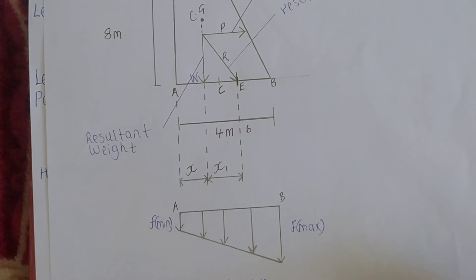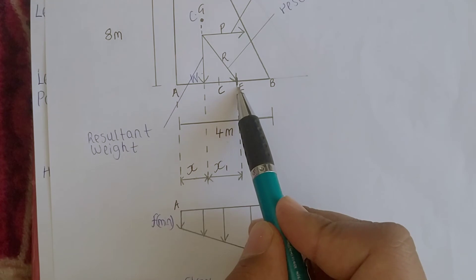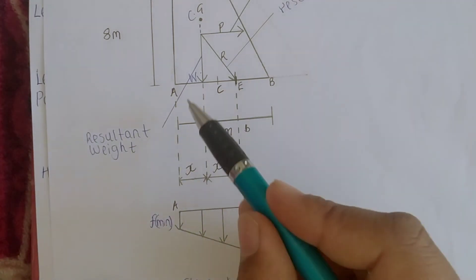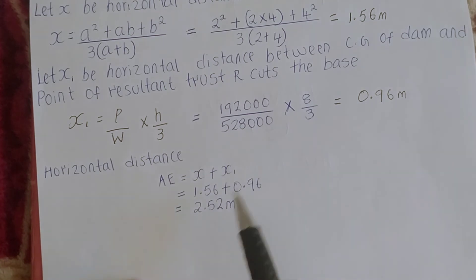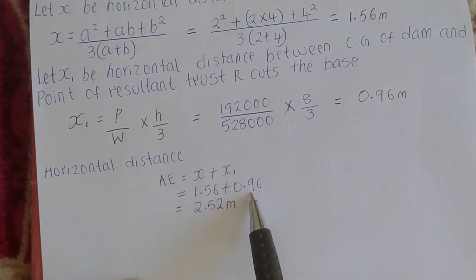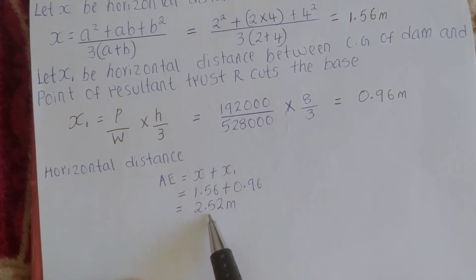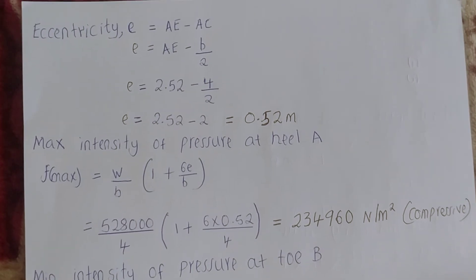The horizontal distance AE equals x plus x1, so that is 1.56 + 0.96 = 2.52 meters. That is the horizontal distance AE.